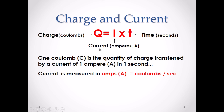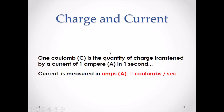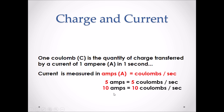The charge given off by a cell is equal to the current flowing in that cell multiplied by the time the cell is running. One coulomb is the quantity of charge transferred by a current of one amp in one second. Current is measured in amps, which is equal to coulombs per second. For example, five amps equals five coulombs per second, and ten amps equals ten coulombs per second.